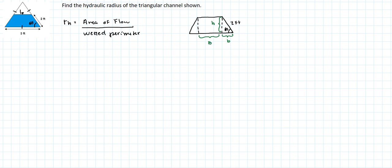So the total area is the area of the rectangle, which is B times H, plus two times the area of the triangle. So that's one half times lowercase b times H.